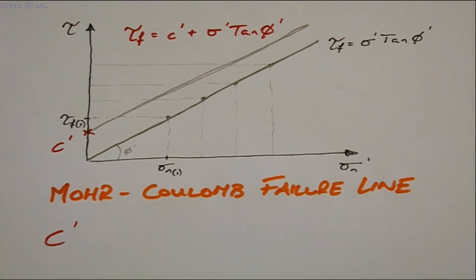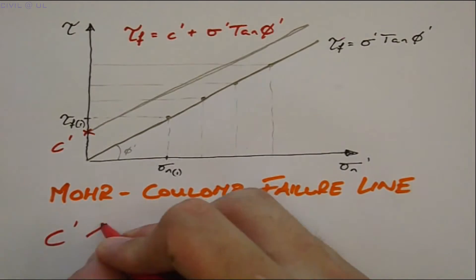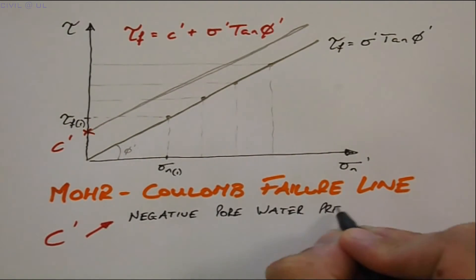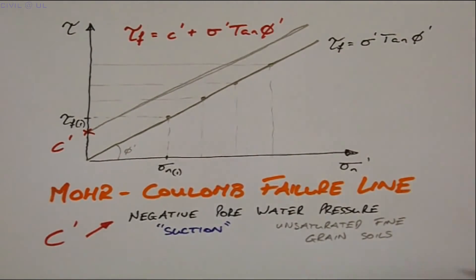Today, the manifestation of C dash can be attributed to negative pore water pressures or suctions in unsaturated or fine-grained soils. The same data may also provide evidence of interlocking stresses that adds to the constant friction resistance, particularly in dense soils.